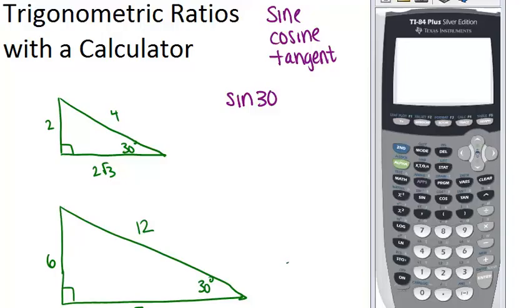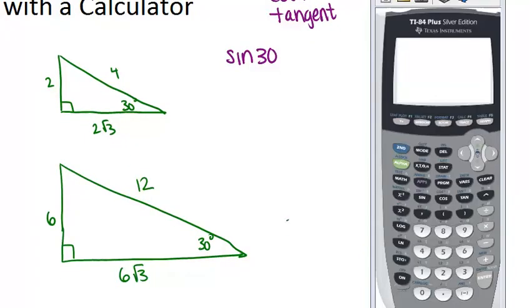So let's just look at that as an example. If we look at this smaller 30-60-90 triangle, and I've labeled the sides 2, 2 root 3, and 4. From the 30 degree angle, the opposite side is 2, 4 is the hypotenuse, and 2 root 3 is the adjacent side. So the sine of 30 degrees, according to this triangle, is 2 over 4, which is 1 half.